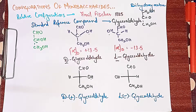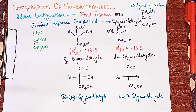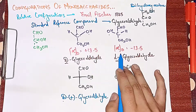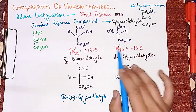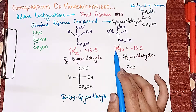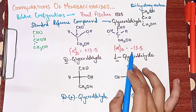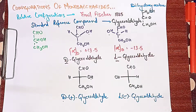According to Emil Fischer, for all monosaccharides: if the OH on the penultimate carbon (second from the bottom) is on the right, we assign D; if it is on the left, we assign L. If we mix both the plus and minus enantiomers, their optical activity cancels out to zero, forming a racemic mixture — a mixture of two optically active compounds whose activities cancel.